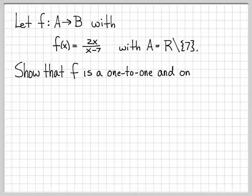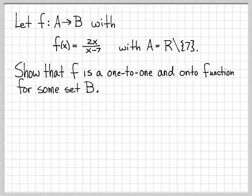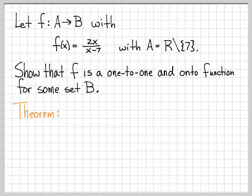What we're going to do is show that f is a one-to-one and onto function on a set B. The way we're going to go about doing this is a little bit different from the previous example, where we used the rigorous definitions of one-to-one and onto. In this problem, we're going to use a theorem that's very well known, which we're not going to prove.